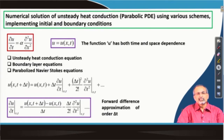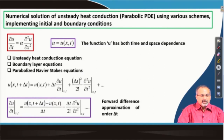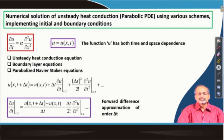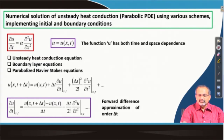On the left-hand side you have a partial derivative of the dependent variable in time, and on the right-hand side you have a spatial second-order derivative of the dependent variable multiplied by a term alpha, which can be called the diffusion coefficient. Depending on the type of physical problem that we are solving, this diffusion coefficient can have different implications. The most important thing to note is that the dependent variable U is now having both a space as well as time dependence.